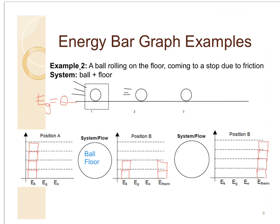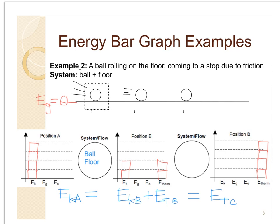Writing the energy conservation equation for this example: at position A there's only kinetic energy, so we call that EKA. At position B we have kinetic energy at B plus thermal energy at B. Notice that kinetic energy at A and kinetic energy at B are not the same — they're represented with a different number of bars, and in calculations they will differ because the ball has slowed down. But the total kinetic plus thermal energy at B does equal the kinetic energy at A. For position C we have Etherm C. Since you've got several equal signs, all the kinetic energy at the beginning equals all the thermal energy generated by the end.